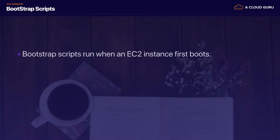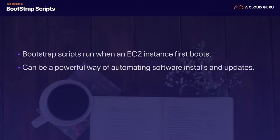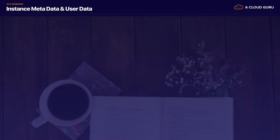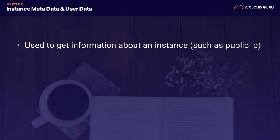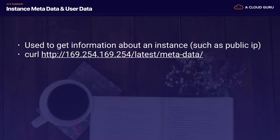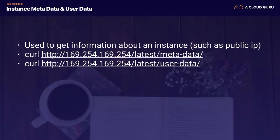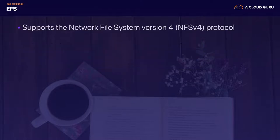Bootstrap scripts run when an EC2 instance first boots and can be a powerful way of automating software installs and updates. We'll create a bootstrap script that installs WordPress and connects to our RDS instances in the next section. Instance metadata is used to get information about an instance such as a public IP — run curl 169.254.169.254/latest/metadata. User data is your bootstrap script passed to the EC2 instance on first boot — access it at curl 169.254.169.254/latest/user-data.